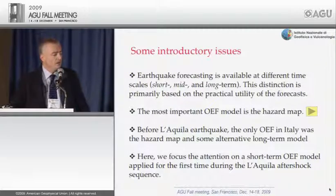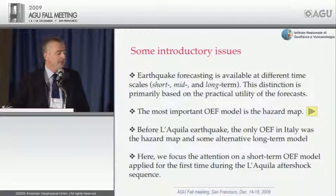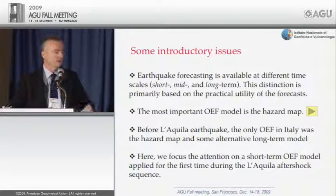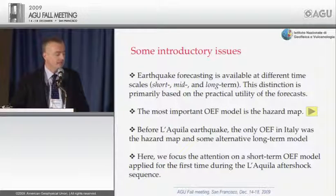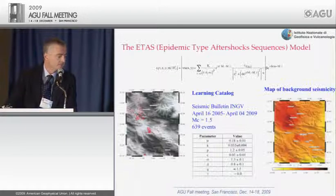Before L'Aquila, the only operational earthquake forecast in Italy was the hazard map and some alternative long-term models. With this experience, we have provided new additional hazard maps and additional operational earthquake forecast models in the short-term perspective — this is the first time we have applied this in Italy.